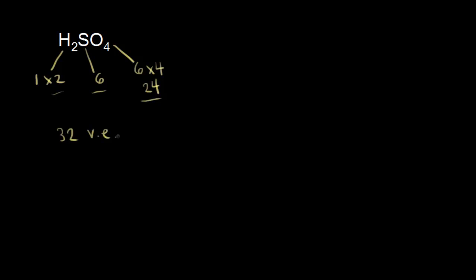Next, we need to choose the central atom. We ignore hydrogen, so it's between sulfur and oxygen. Looking at the periodic table, oxygen is higher in group 6 than sulfur, so oxygen is more electronegative, and therefore we put sulfur at the center. Sulfur is attached to 4 oxygens, so we place the 4 oxygens around it. Then we have 2 hydrogens — since we're dealing with an acid, we put the hydrogens on oxygens. Let's count how many valence electrons we've used drawing this skeleton.